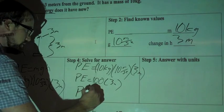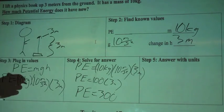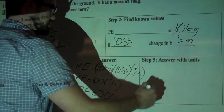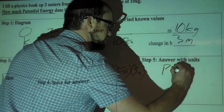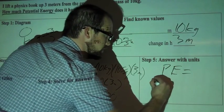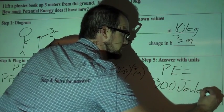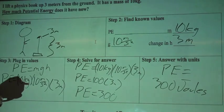We talked about earlier that potential energy is measured in joules, so my answer with units, I'm going to write, so PE is equal to, or potential energy is equal to 300 joules, J-O-U-L-E-S. And that's it.